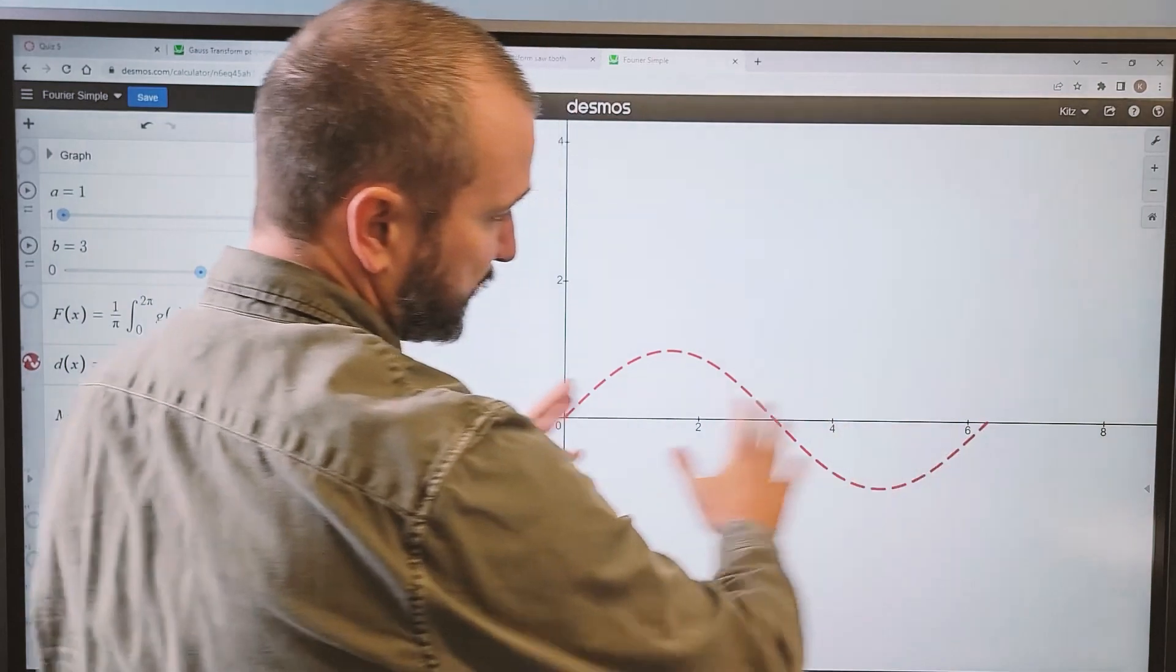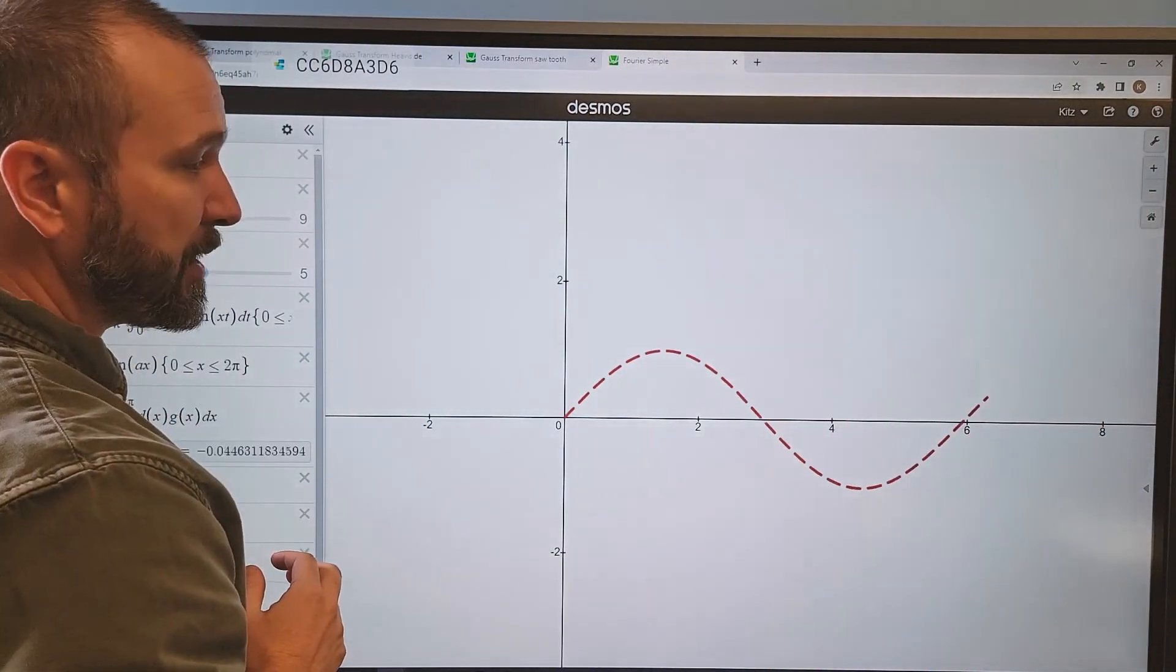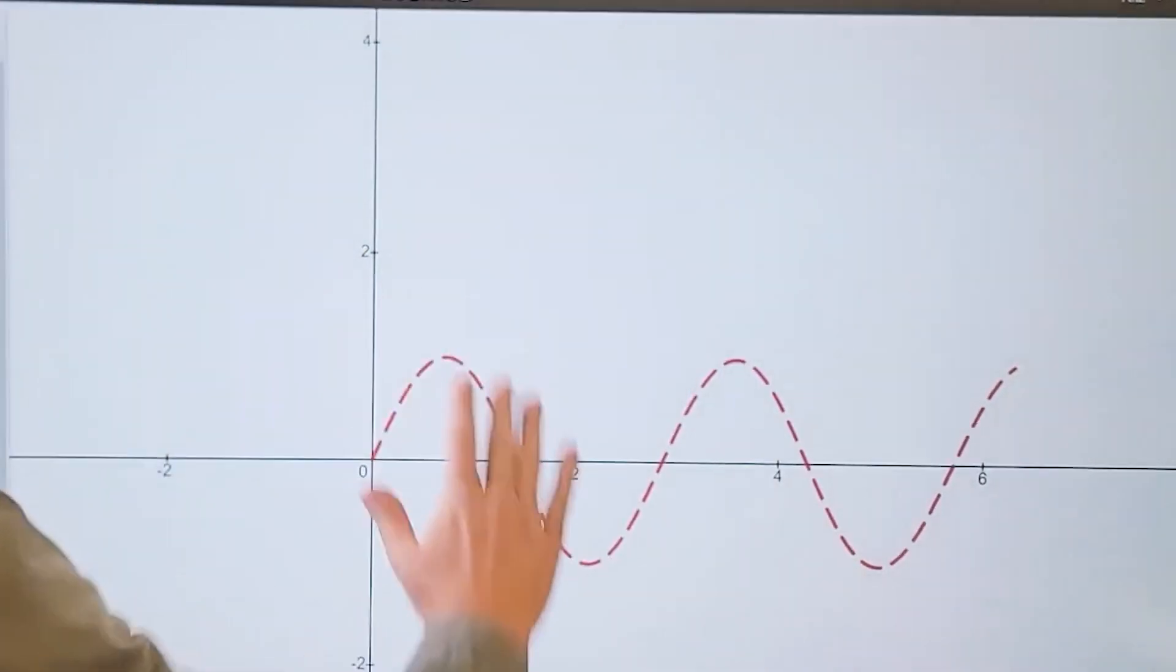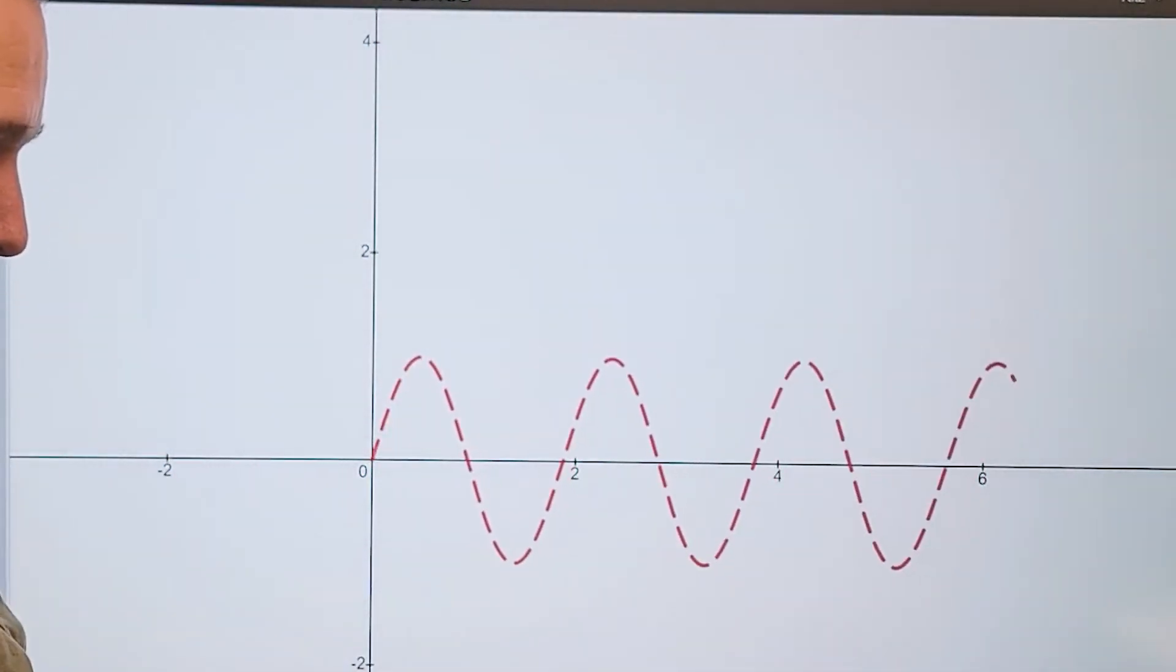Instead of just imagining my wave sliding left and right across the curve, what I'm going to do is I'm going to imagine sliding through the frequency. So as I slide through, instead of increasing the position of the density function, I am increasing the frequency of the density function.